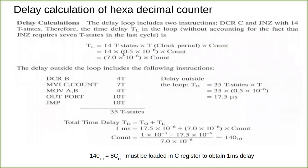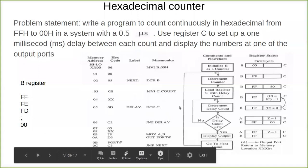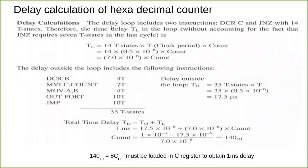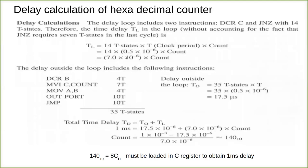For the inside loop, TL accounts for the decrement C and JNZ instructions. Decrement C takes 4 T-states and JNZ takes 10 T-states, giving 14 T-states total inside the loop. The clock period is 0.5 microseconds, since the frequency is 2 MHz. So the inside loop delay is: 14 T-states × 0.5 × 10⁻⁶ × count, which equals 7.0 × 10⁻⁶ × count. We still need to find the count.